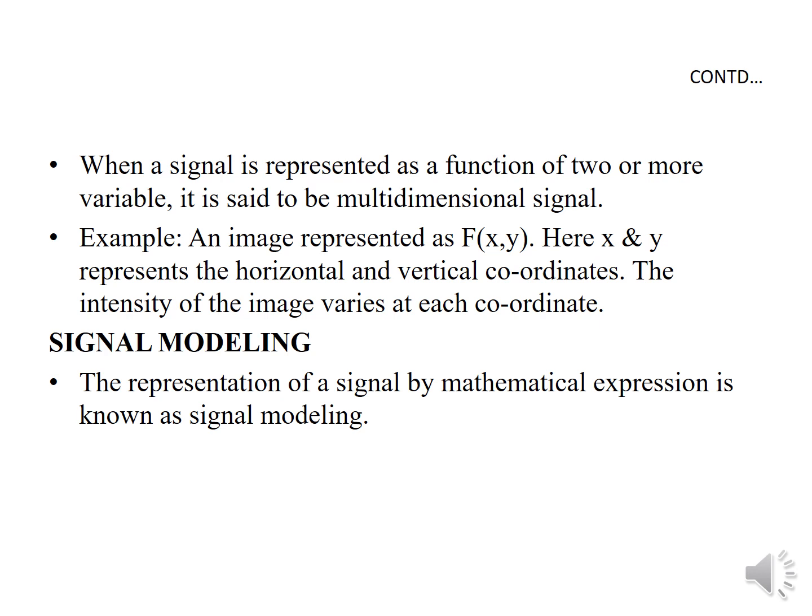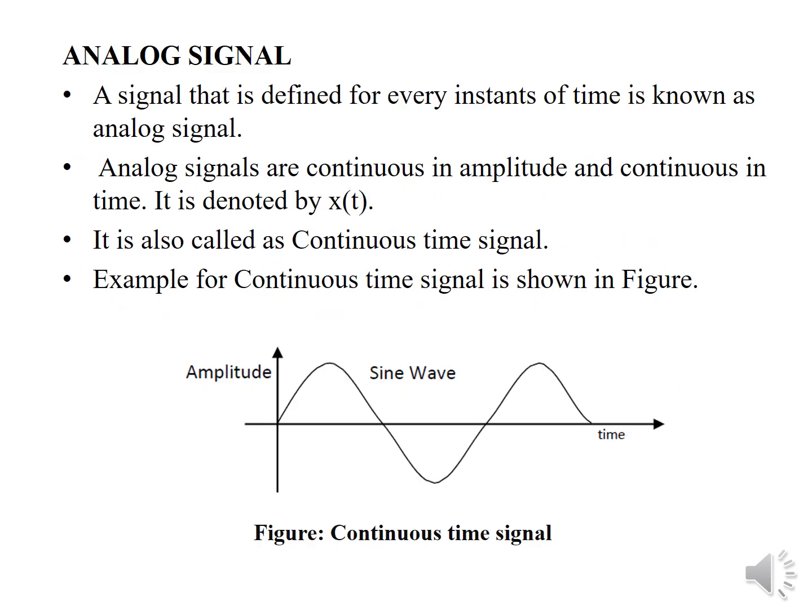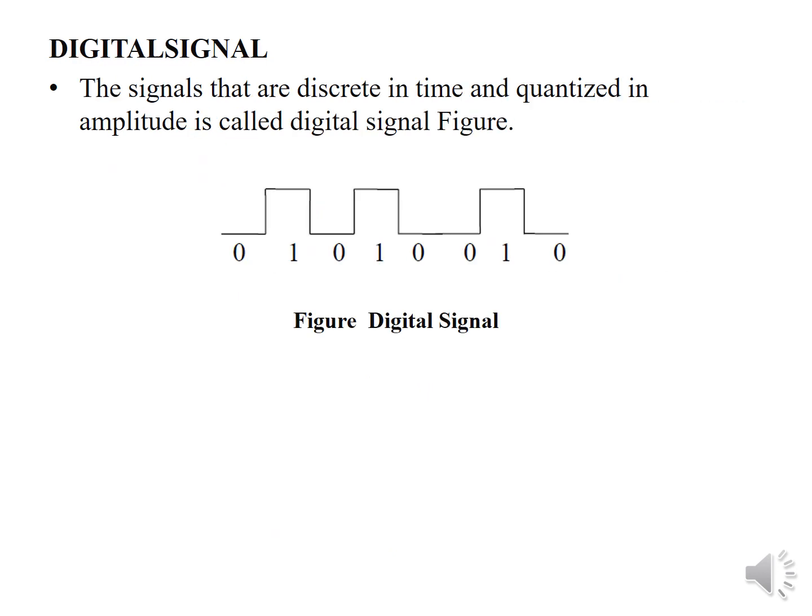Signal modeling: the representation of a signal by a mathematical expression is said to be signal modeling. Analog signal: a signal that is defined for every instant of time is said to be the analog signal. Analog signals are continuous in amplitude and continuous in time. It is denoted by x(t) and is also called a continuous time signal. This is an example for the continuous time signal.